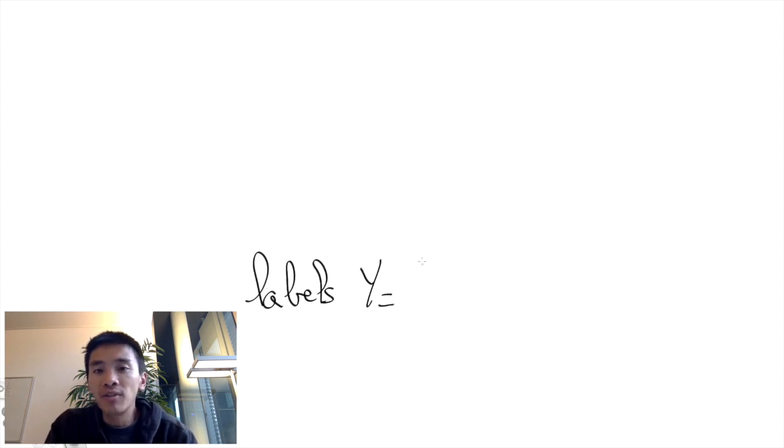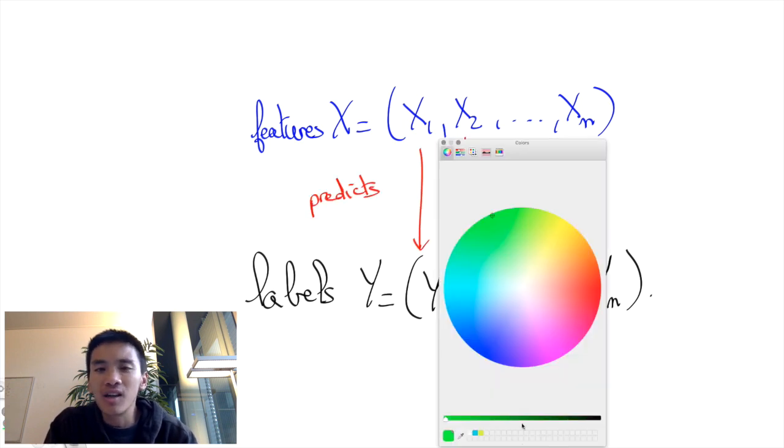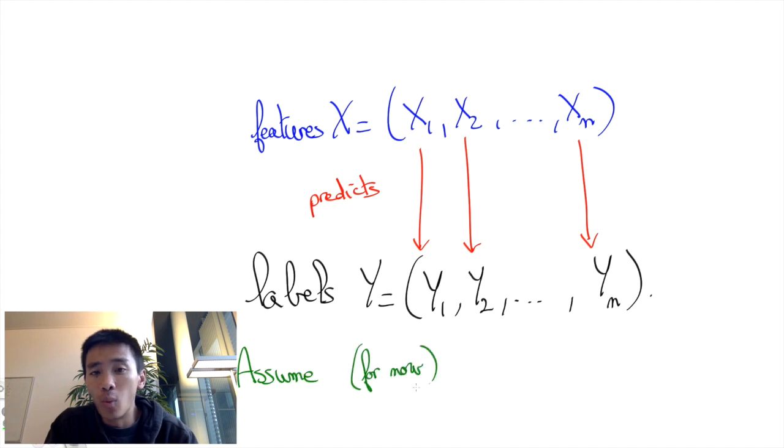We have real-valued labels Y = (y1, ..., yn) and real-valued features X = (x1, ..., xn). Let's assume for simplicity that x̄ = ȳ = 0, so we don't need to add a constant factor in our linear regression.